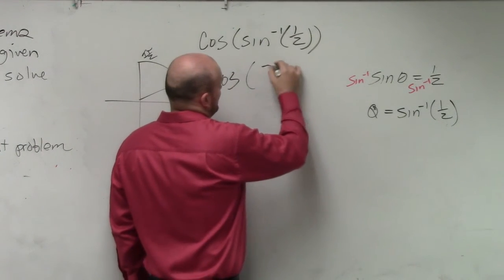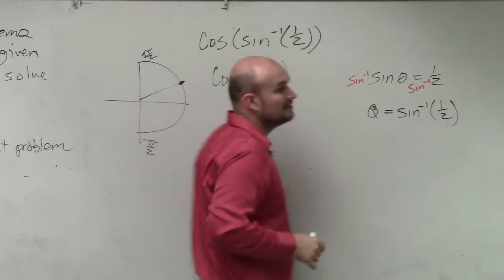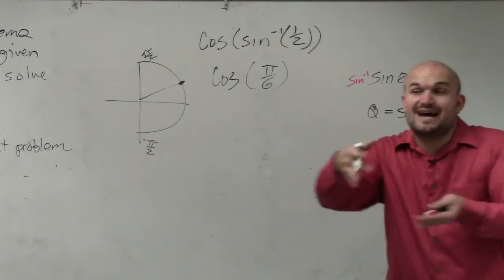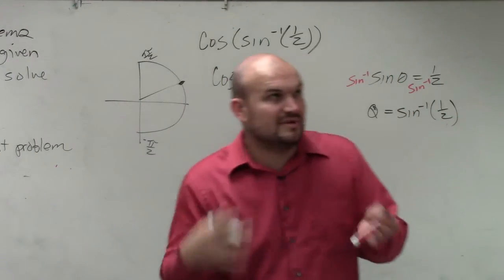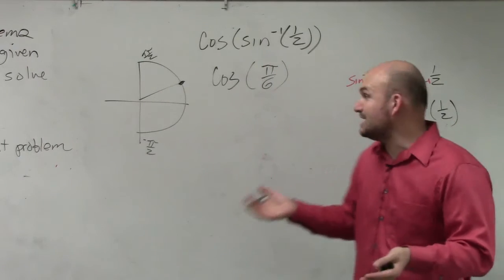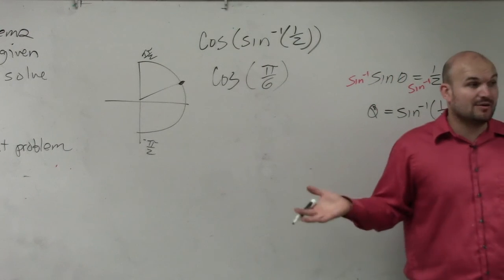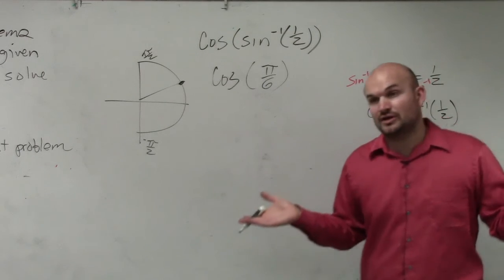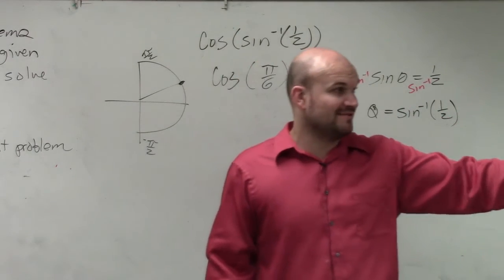So now we do cosine of pi over 6, right? So we figured out the sine inverse of 1 half is pi over 6. Now we just need to figure out what is the cosine of pi over 6.